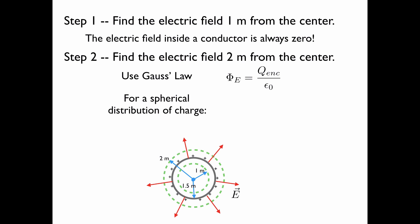So for a spherical distribution of charge, which we have, we have a spherical shell, the total electric flux is equal to 4 pi r squared times the electric field on the sphere. This comes from the fact that the surface area of a sphere is 4 pi r squared, and then we multiply that by the electric field.